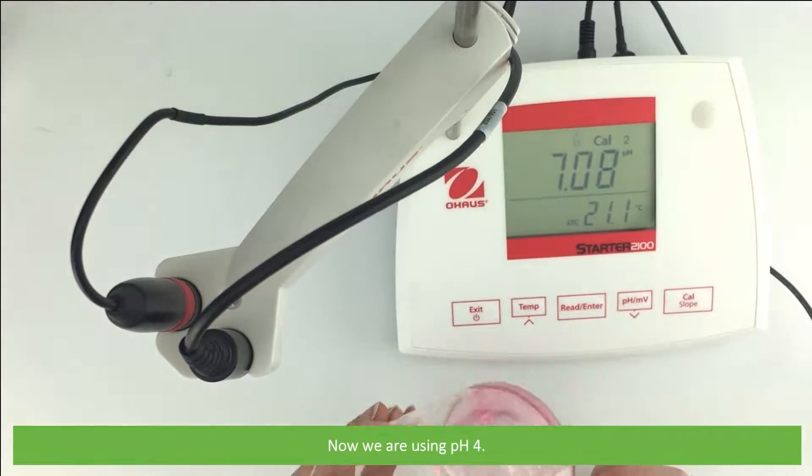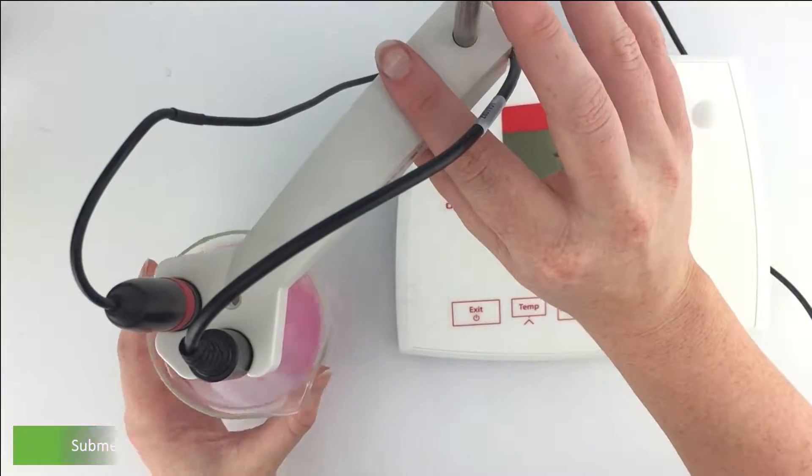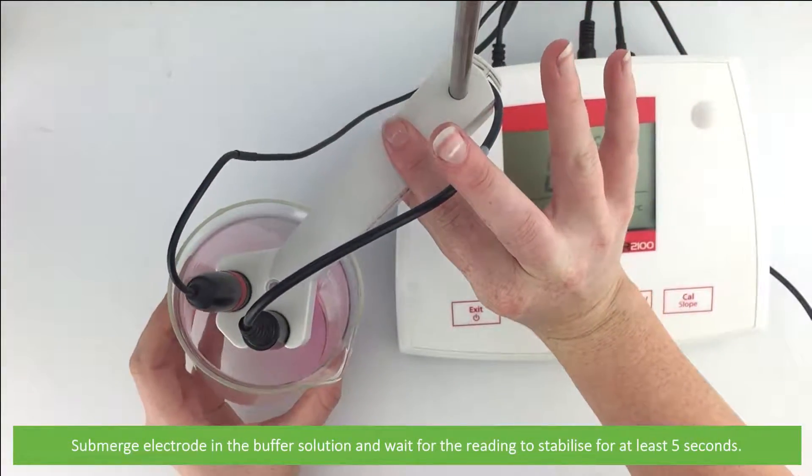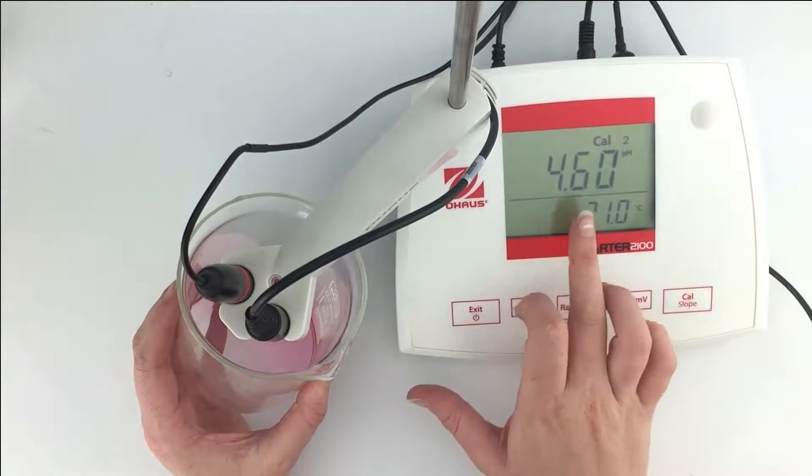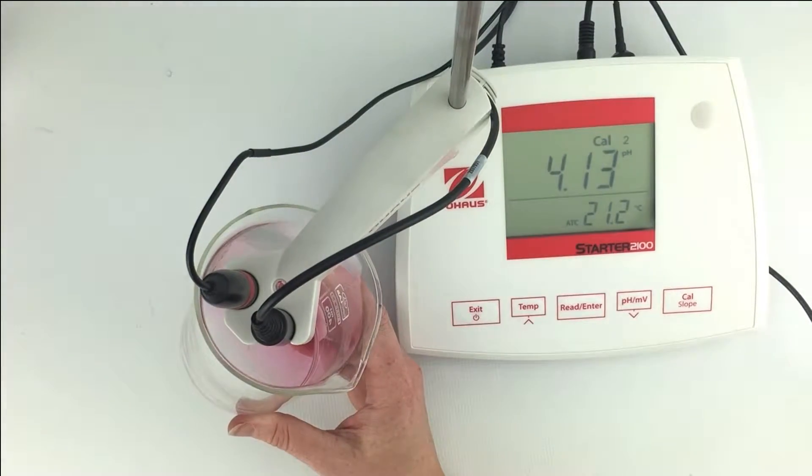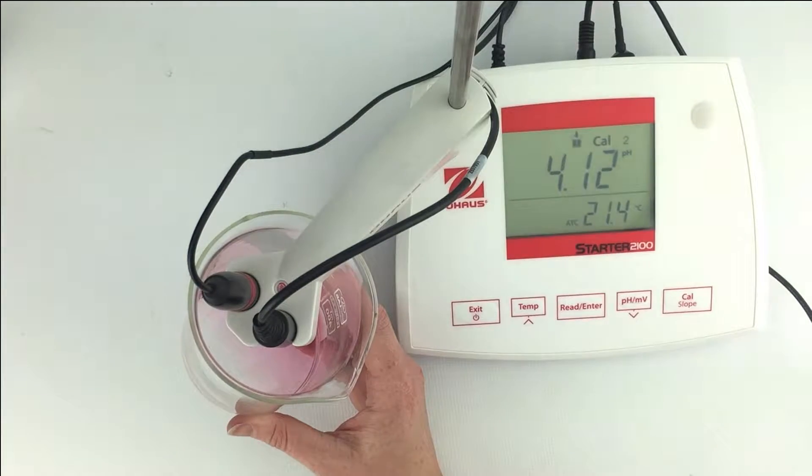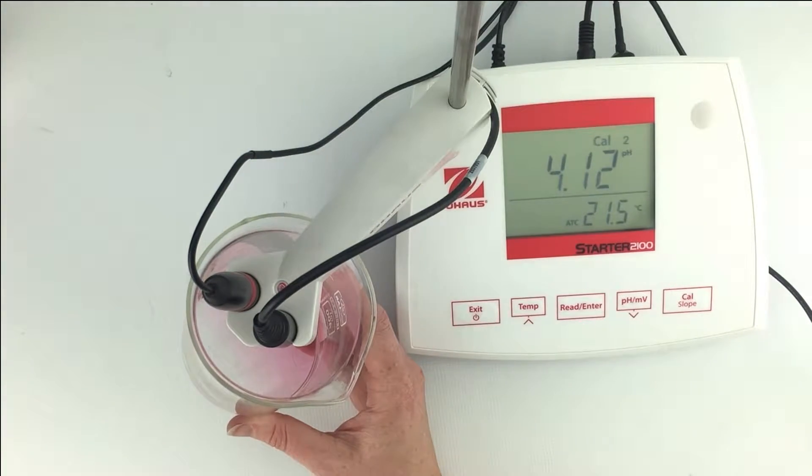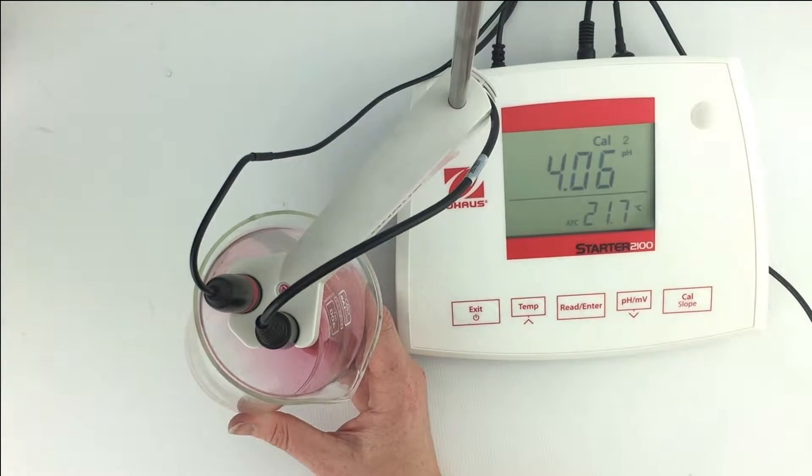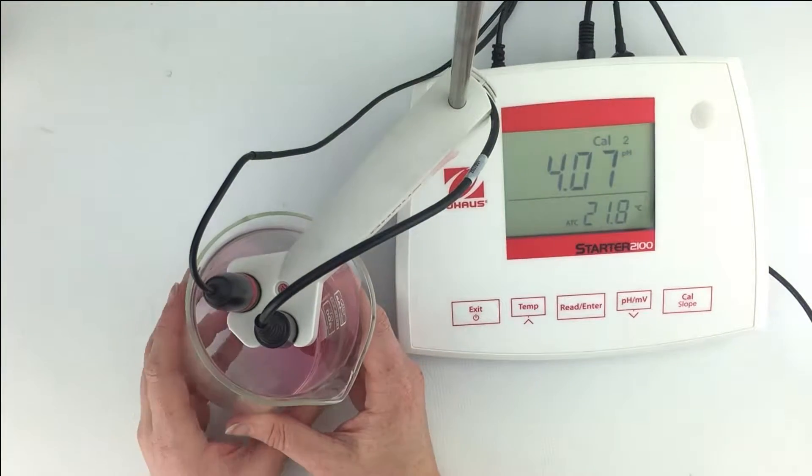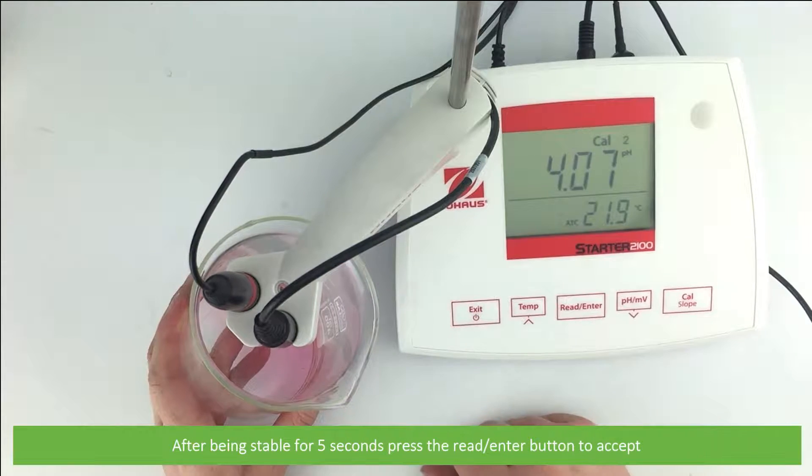Now we are using pH 4. Submerge the electrode in the buffer solution and wait for the reading to stabilize for at least five seconds. After being stable for five seconds press the read slash enter button to accept.